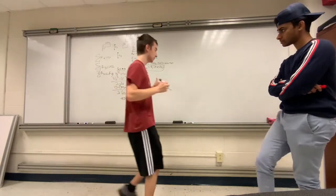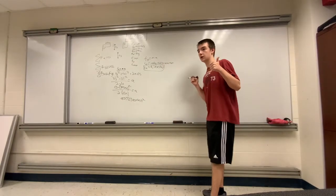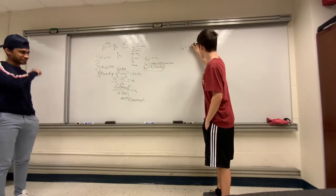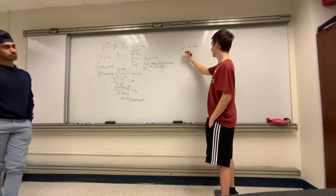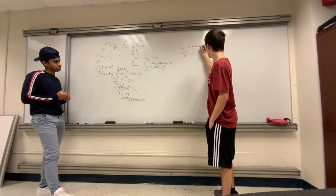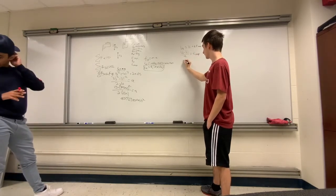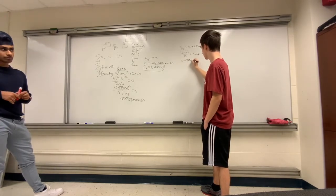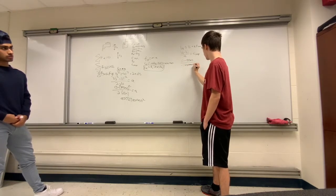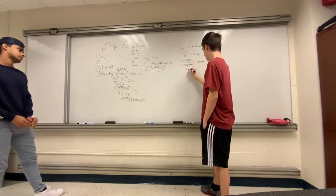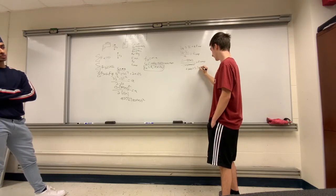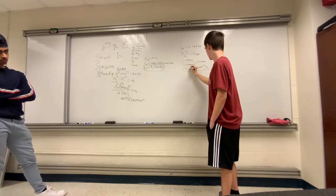Now we're solving for the time it takes the bullet to stop. Using the kinematic formula: final velocity equals initial velocity plus a times t. Solving for t: t equals final velocity minus initial velocity, divided by a. Plugging in values — final velocity is 0, initial velocity is 400 meters per second, and acceleration is negative 727,000 meters per second squared — this comes out to 5.5 times 10 to the negative 4 seconds. That is the answer for Part B.